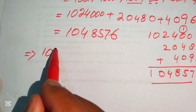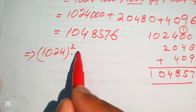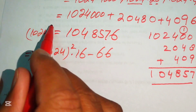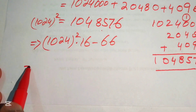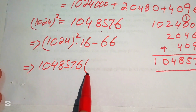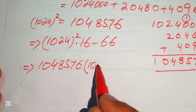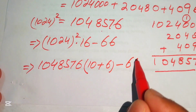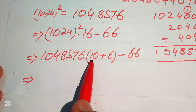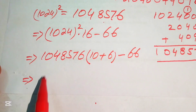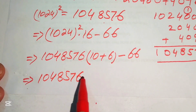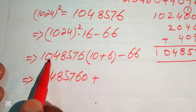Our expression above was 1024 squared multiplied by 16, minus 66. Substituting 1024 squared equals 1,048,576, we get 1,048,576 multiplied by 16. We break 16 as 10 plus 6, so multiplying by 10 we simply add a zero, giving 10,485,760.